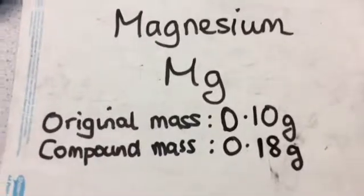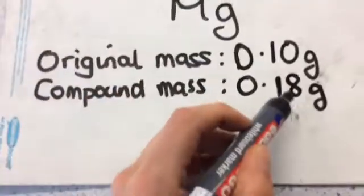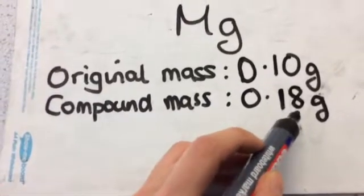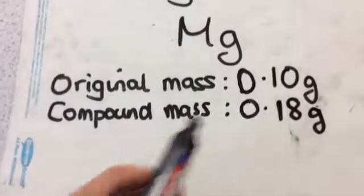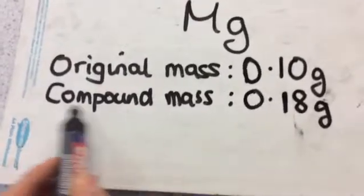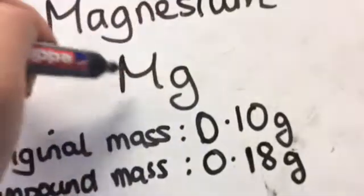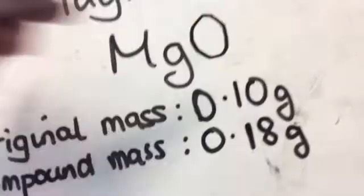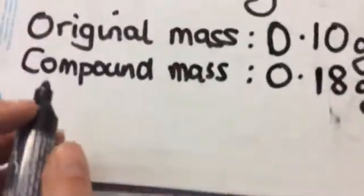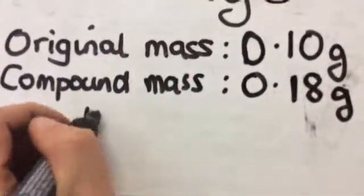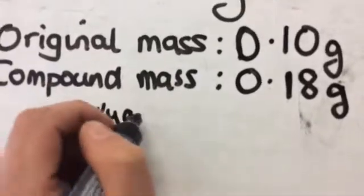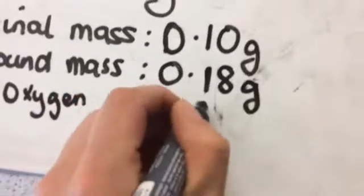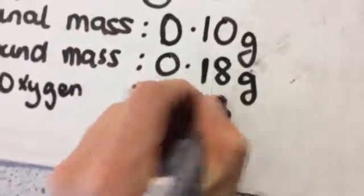So that means that I have gained an extra 0.08 grams, which is obviously a very small amount. Now that's because I've now formed a compound. So my magnesium has gone from being magnesium to magnesium oxide and we can therefore tell that it is the added oxygen that makes up that 8 grams.